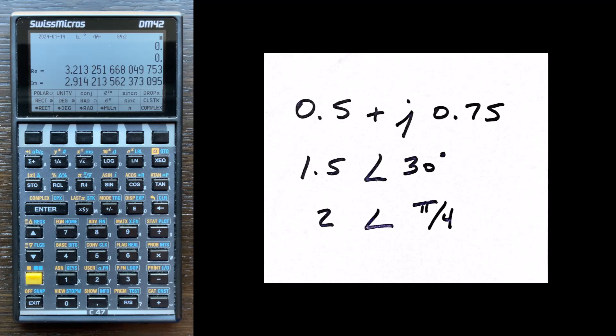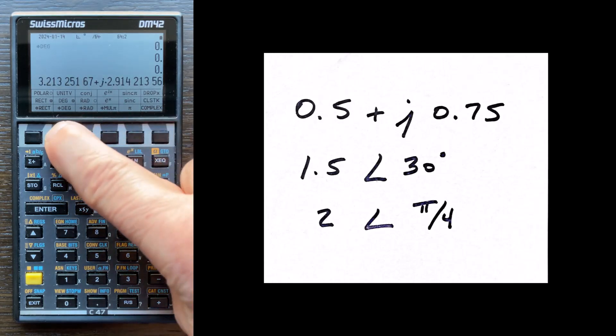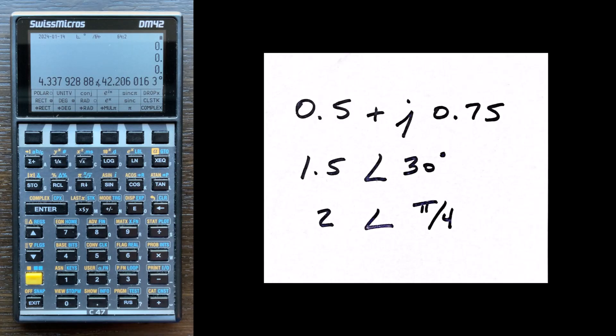If I want magnitude and phase instead, I press complex again to put it back into a complex number, change the format to degrees, and press complex one more time. Then I see magnitude and phase entries on the stack. I can see which entry is magnitude and which is phase quite easily. The phase entry is in units of degrees.